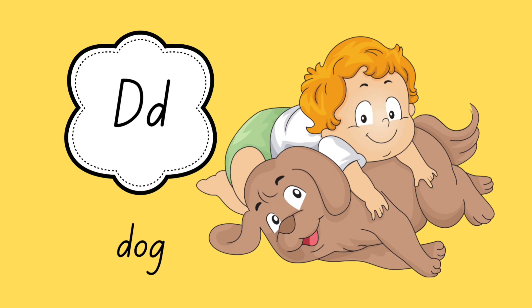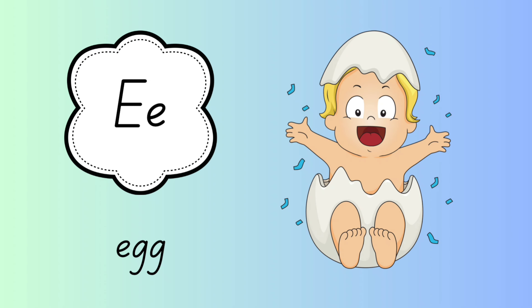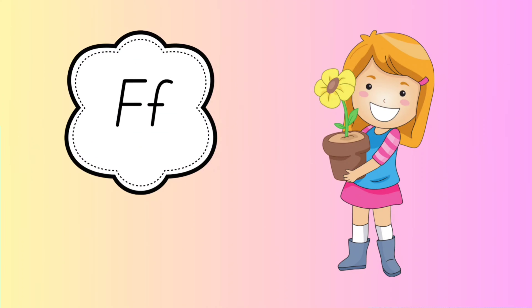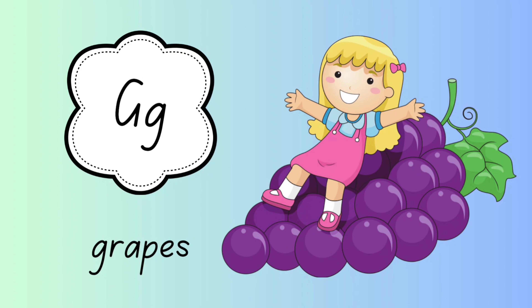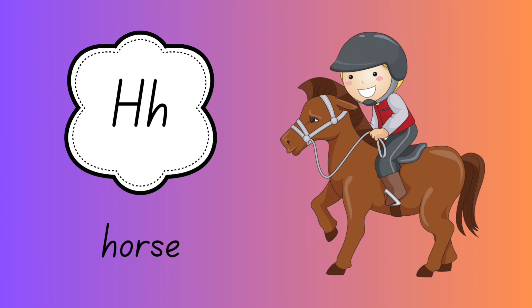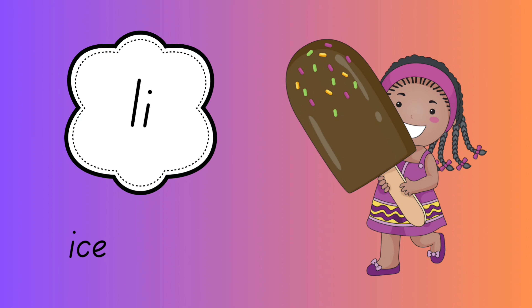E for egg. F for flower. G for grapes. H for horse.